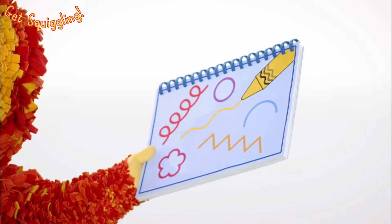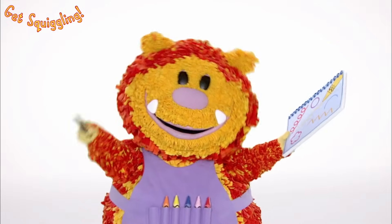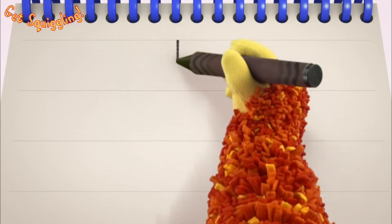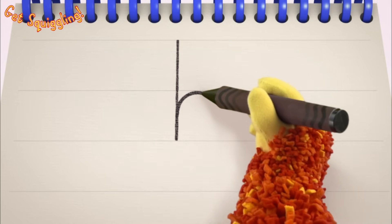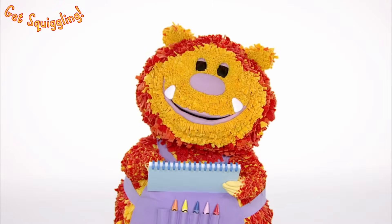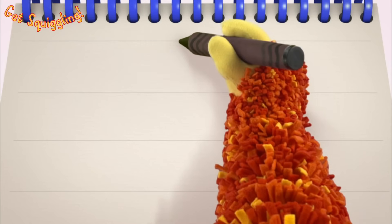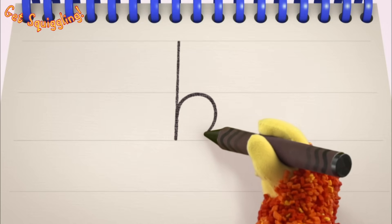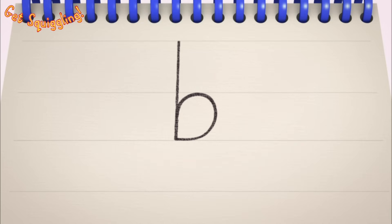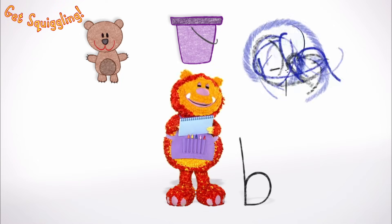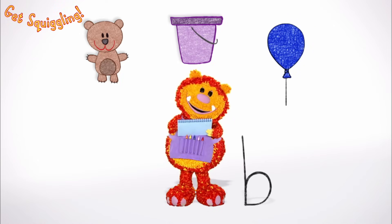Have you got your squiggle pads and squiggle sticks ready? Let's get squiggling! Holding your squiggle stick like this, move it down, up a bit, over and round — the letter B! Let's squiggle it again: go down, up a bit, over and round — the letter B! Shall we squiggle some things that start with the letter B? A bear, a bucket and a balloon — they all begin with the letter B!